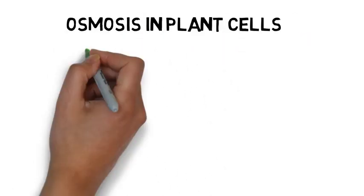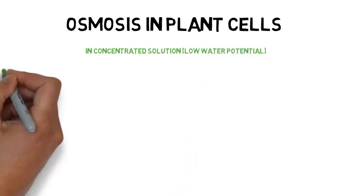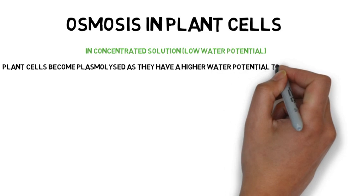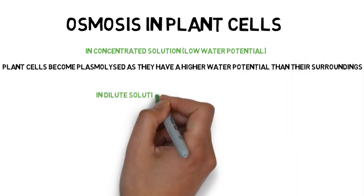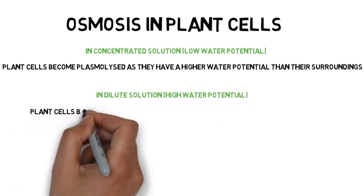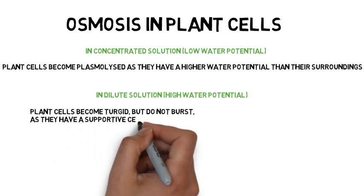Osmosis in plant cells. In concentrated solution, lower water potential, plant cells become plasmolyzed as they have a higher water potential than their surroundings. In dilute solution, high water potential, plant cells become turgid, but do not burst as they have a supportive cell wall that is tougher than their cell membrane.